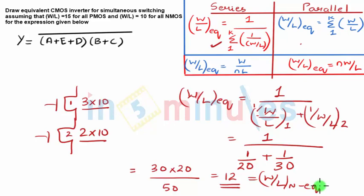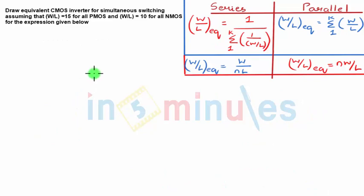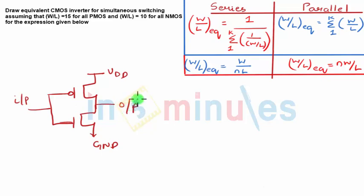So we have got the PMOS equivalent, we have got the NMOS equivalent. We have to just draw an inverter equivalent and substitute the value of W by L in that. So my final circuit is nothing but PMOS, NMOS, input shorted because it's an inverter, this is my VDD, this is my ground, this is my input, this is my output. And you have seen that W by L equivalent for PMOS is nothing but 12.5 and W by L equivalent for NMOS is 12.